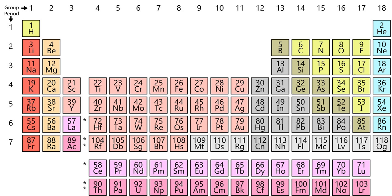In 1789, Antoine Lavoisier published a list of 33 chemical elements, grouping them into gases, metals, nonmetals, and earths. Chemists spent the following century searching for a more precise classification scheme. In 1829, Johann Wolfgang Döbereiner observed that many of the elements could be grouped into triads based on their chemical properties — lithium, sodium, and potassium, for example, were grouped together as soft, reactive metals. Döbereiner also observed that, when arranged by atomic weight, the second member of each triad was roughly the average of the first and the third. This became known as the law of triads.